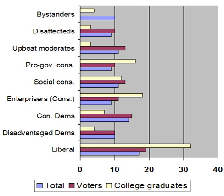Political ideologies in the United States refers to the various ideologies and ideological demographics in the United States. Citizens in the U.S. generally classify themselves as adherent to positions along the political spectrum as either liberal, progressive, moderate, or conservative.